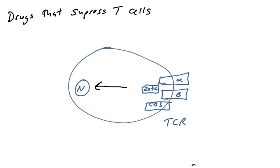Let's talk about a number of different compounds that suppress T-cells. They all have pluses and minuses and are used in particular instances where they have been deemed successful. Here's a general T-cell with a T-cell receptor — it has the T-cell receptor alpha and beta proteins, some CD3 proteins, and the zeta protein, which is the intracellular protein that becomes phosphorylated on ITAMs. When the T-cell receptor engages a peptide-MHC complex, it sends a signal to the nucleus so that the T-cell will activate.